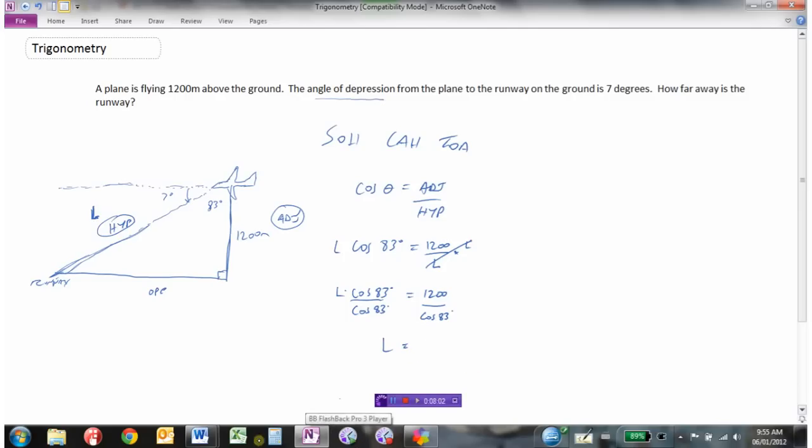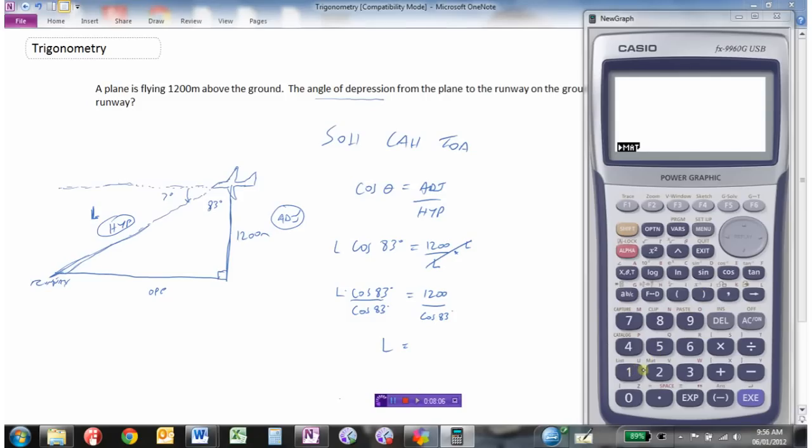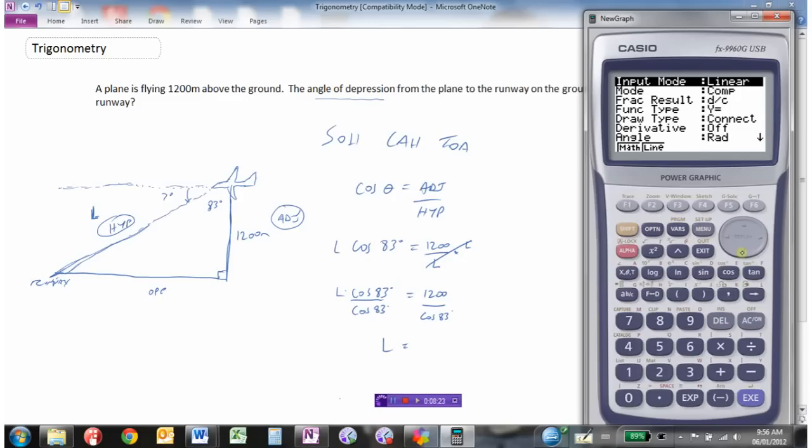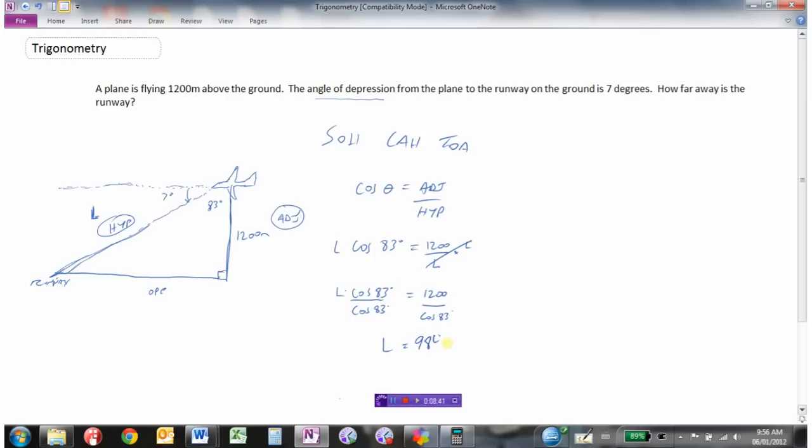It's now a calculator question. So L will equal 1200 divided by cosine 83. My calculator was in radians, so let's change that to degrees. So I get 9846.6, and that's in meters. Maybe we want to convert this to kilometers, so divide that by a thousand. We get about 9.8 kilometers. So just under 10 kilometers away from the runway when he's in a situation like this. So there's a question dealing with angle of depression.